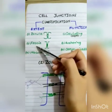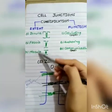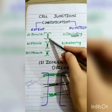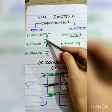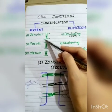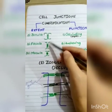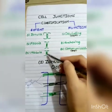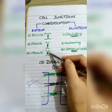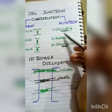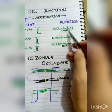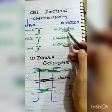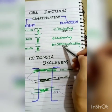In extent-based classification, there are three types: zonula, fascia, and macula. In zonula, the entire perimeter of the cell membrane is involved in the junction. In fascia, only a small band is involved. In macula, only a spot is involved.